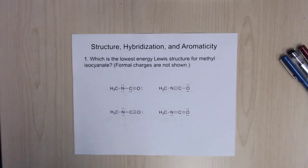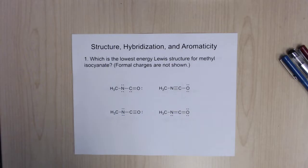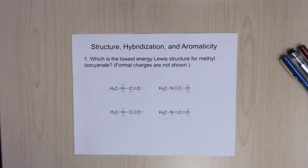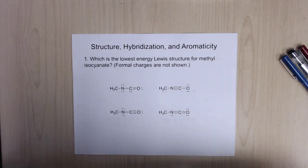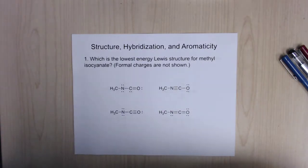So we're talking about things like determining if it's sp2, sp3, formal charge, Lewis structures, things like that. First up, we're looking at the lowest energy Lewis structure for this molecule. In order for it to be the lowest energy, you're going to want to minimize the amount of formal charges the molecule has, as well as making sure everybody has their octet filled.